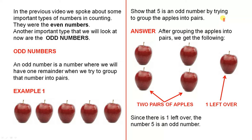Let's look at an example here. Show that 5 is an odd number by trying to group the apples into pairs. Here's the answer. After grouping the apples into pairs we get the following.